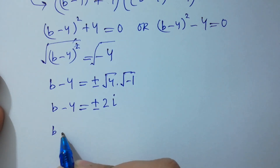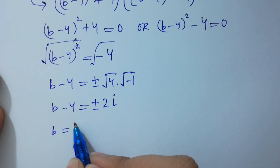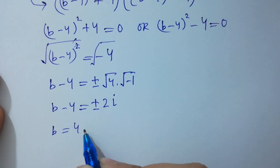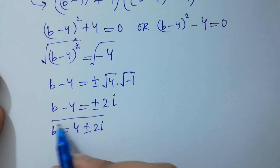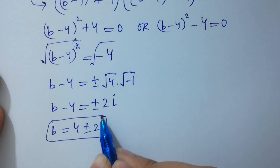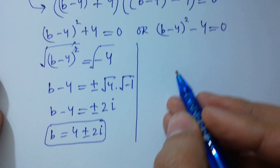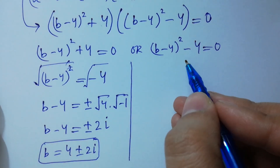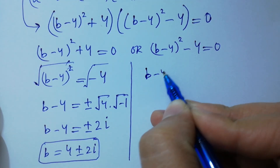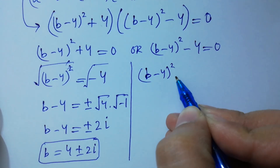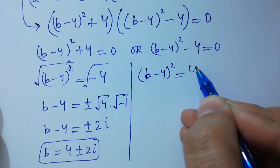So b-4 = ±2i, meaning b has two complex solutions from the case (b-4)² + 4 = 0. Now for the other case, (b-4)² - 4 = 0, so (b-4)² = 4.